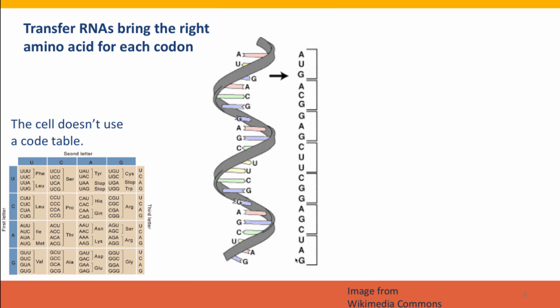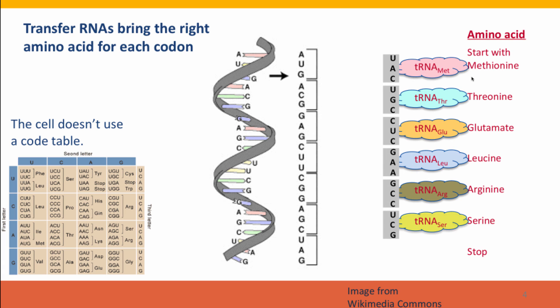Here's a second drawing showing a simplified transfer RNA. For each amino acid, there's a different transfer RNA with the appropriate anticodon. So this is the methionine transfer RNA with its anticodon, and the threonine transfer RNA bringing threonine to base pair with the complement of those three bases. This is how the genetic code is used to translate the base sequence of a messenger RNA from a gene into the amino acid sequence of a protein.